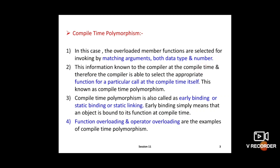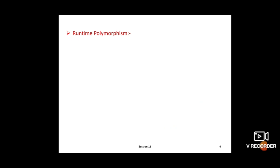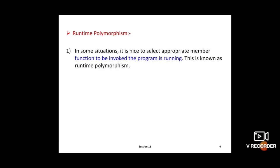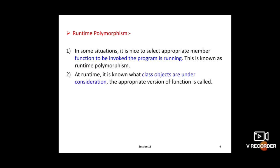Runtime polymorphism means that after compile time, in the runtime process, the appropriate member function can be selected at runtime. Member functions are also called methods. In some situations it is useful to select the appropriate member function to be invoked while the program is running — this is known as runtime polymorphism.